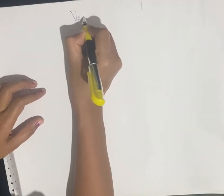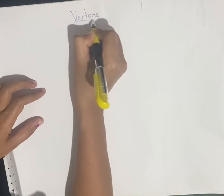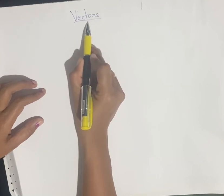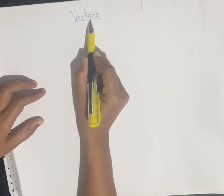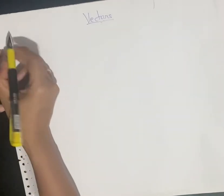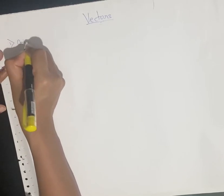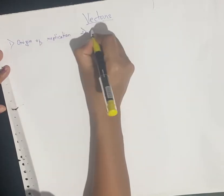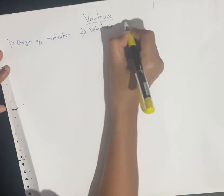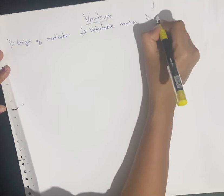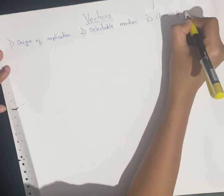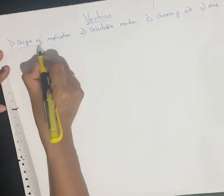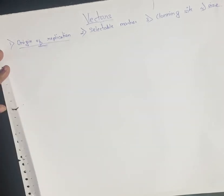Students, I was discussing the second tool of recombinant DNA technology — vectors. A plasmid acting as a vector should have four features: one is origin of replication, second is selectable marker, third is the cloning site, and fourth is the size of the vector. The origin of replication was already discussed in the previous video.